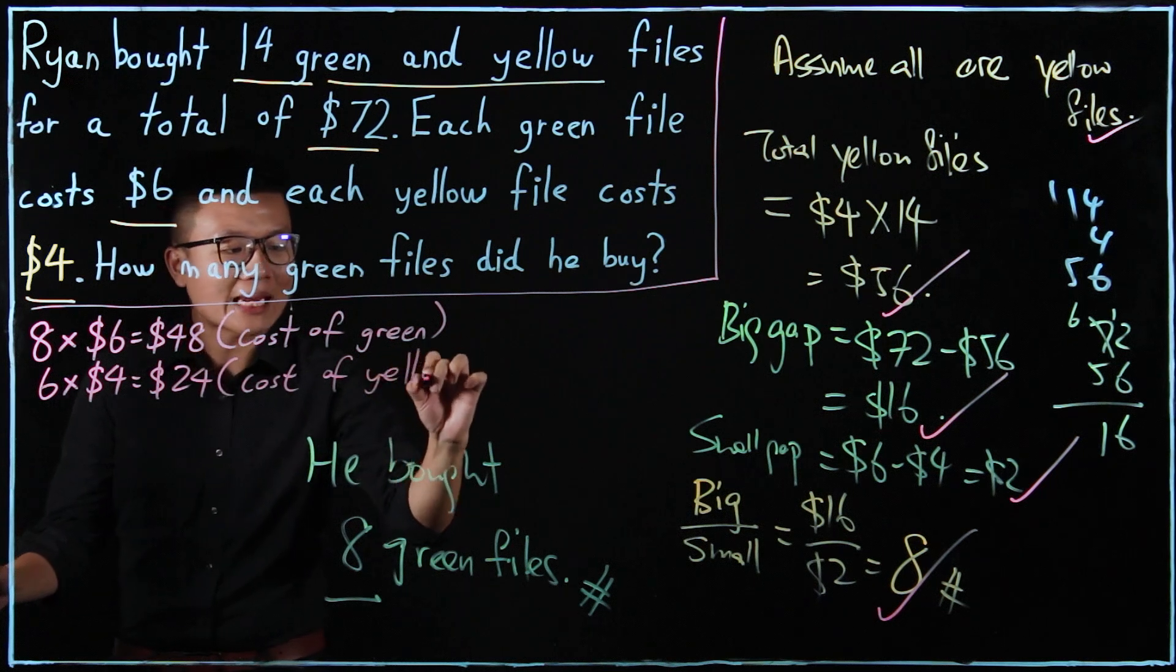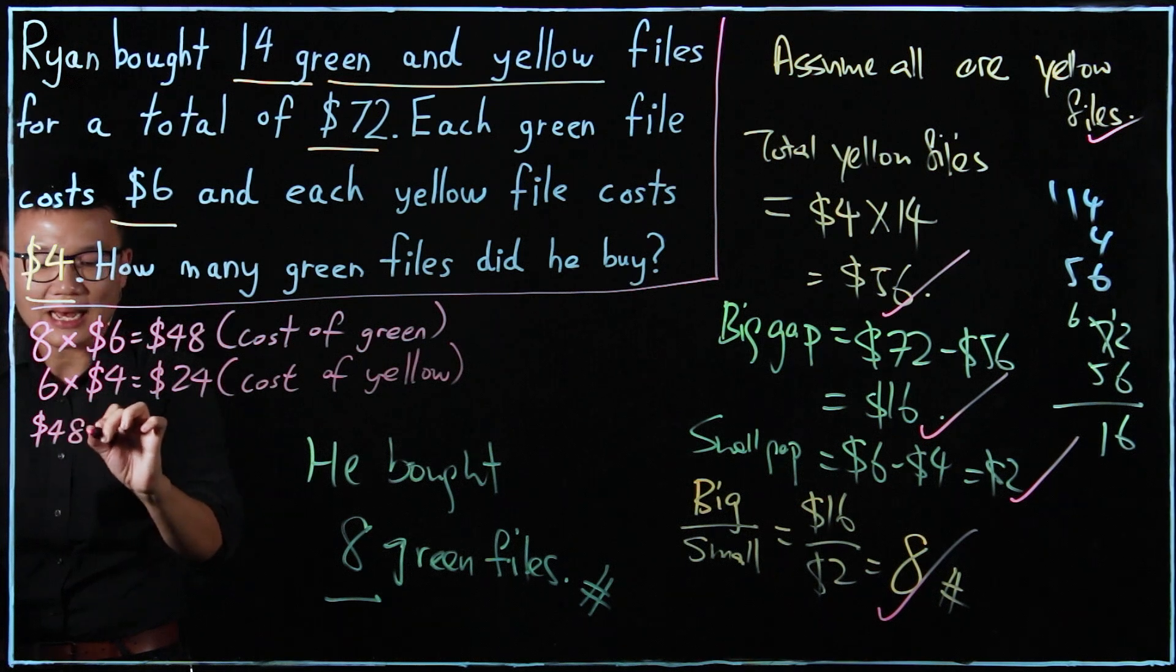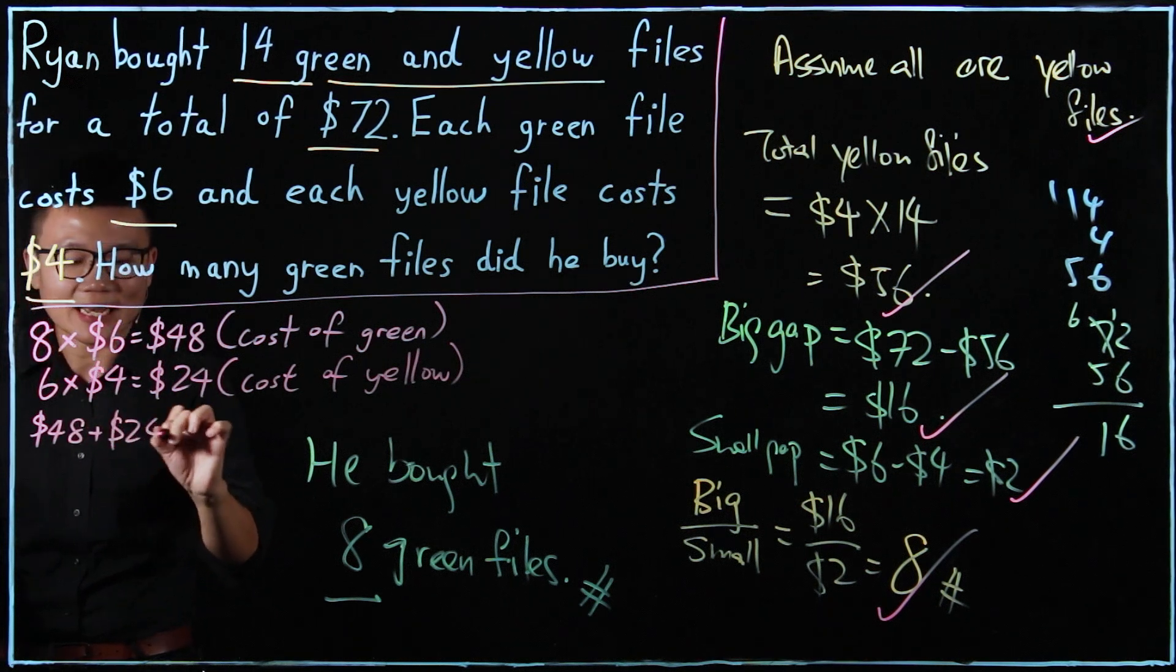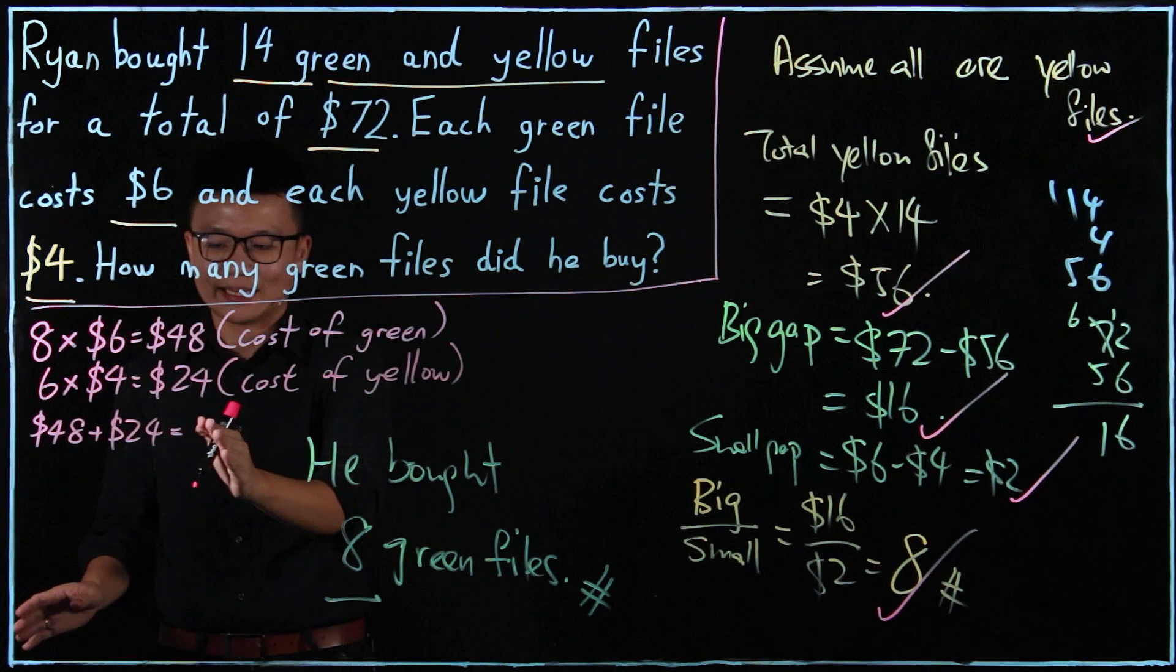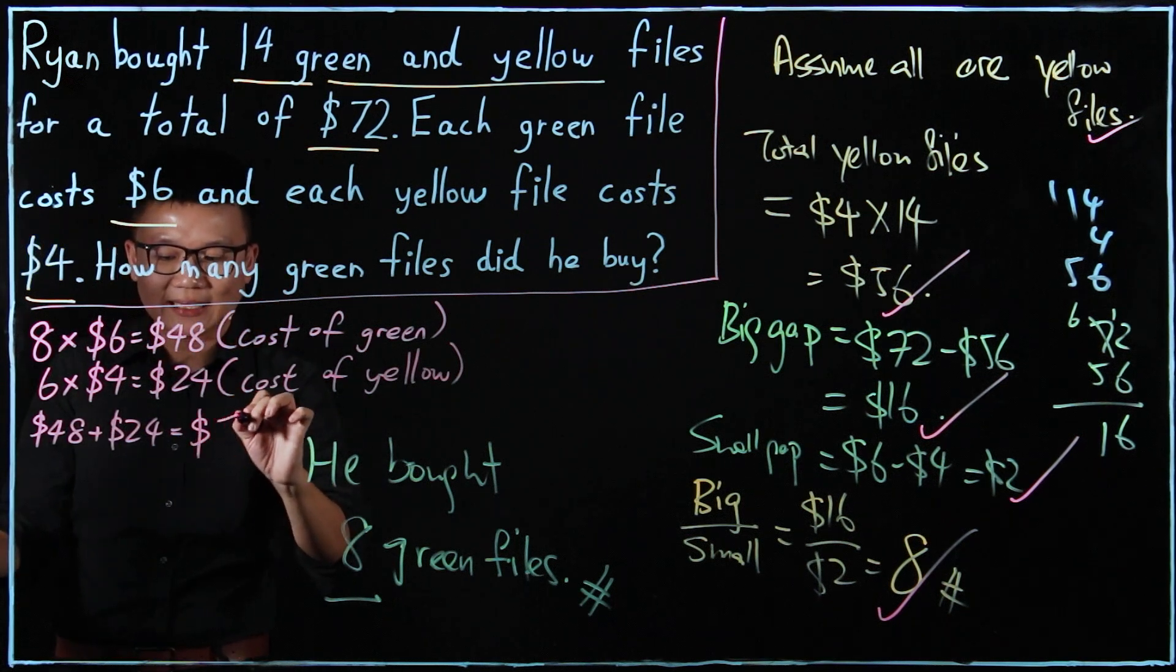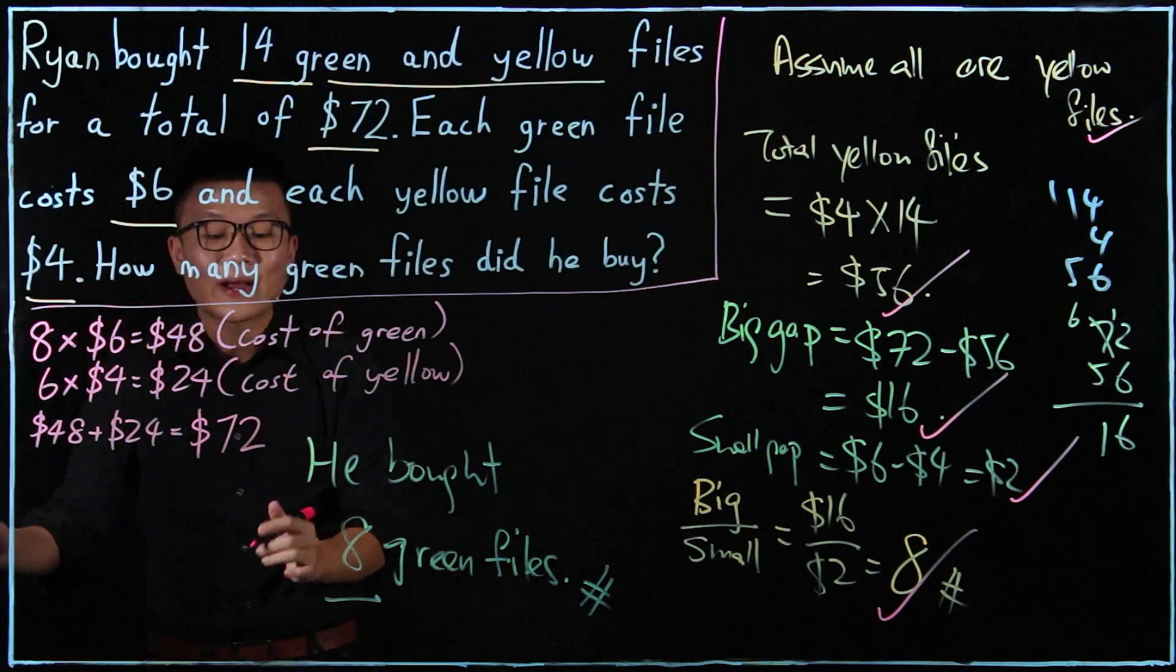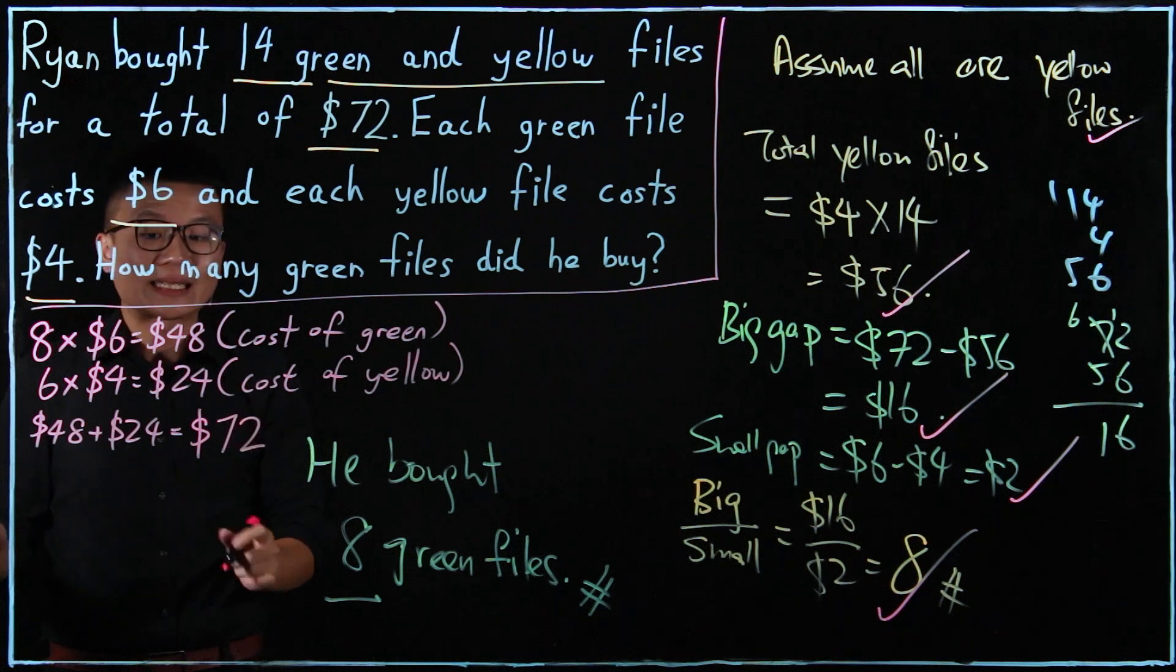Now, I'm going to add up the total amount of cost. So $48, I add $24. How much will I get? Let's see. After working it out mentally, I get $72. So I'm going to check $72, $72. That is how I know that this is indeed the right answer.